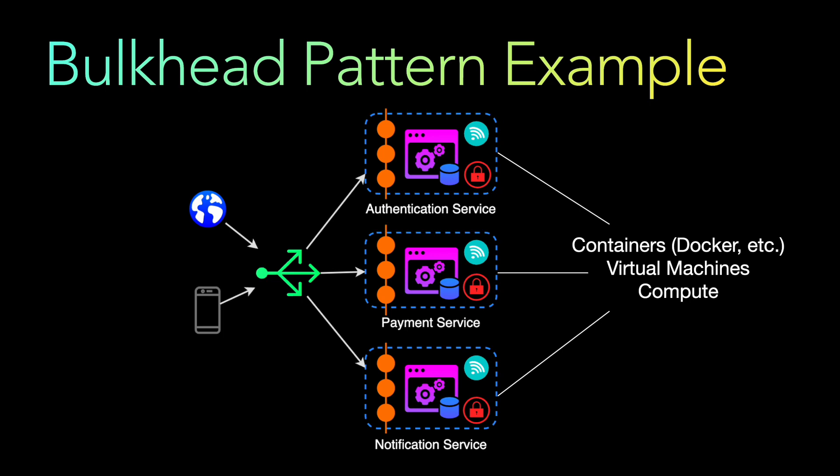Each of these microservices deployed in different containers — like Docker — is basically isolated. So any impact to the authentication service — whether it's a security threat, network issue, compute or storage problem — is contained within that container and will not propagate to other services like the payment service or the notification service. These isolated containers or virtual machines are essentially what we call bulkheads.